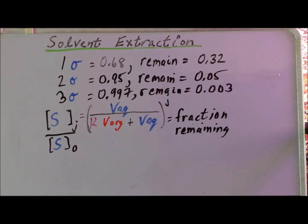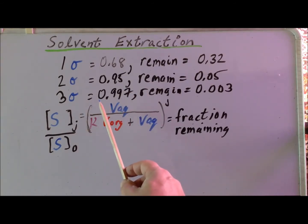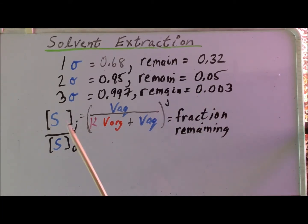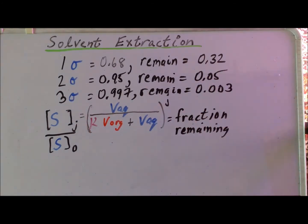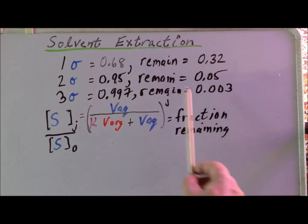Again, if we have a normal distribution, within three standard deviations of the mean, we would expect the probability of finding a particular member of the population to be 0.997, which means the amount remaining in the aqueous phase, if this were true, would be 0.003. So to summarize: one sigma would correspond to J equals 1, one extraction; two sigma is J equals 2; and three sigma is J equals 3, where we should have 0.003 as our fraction remaining after three extractions.